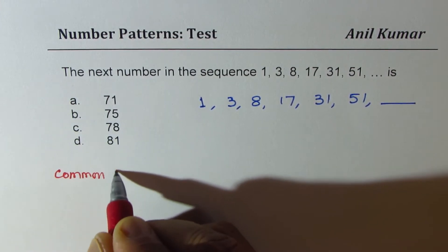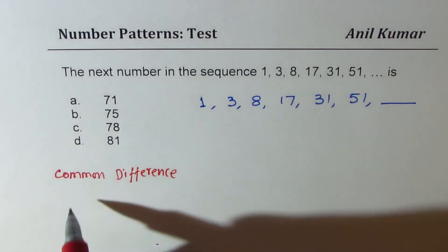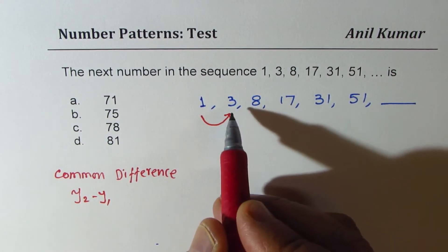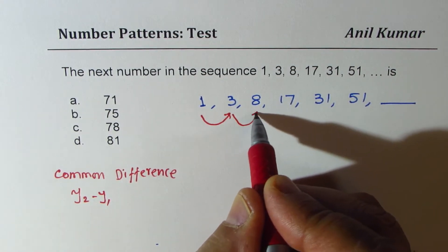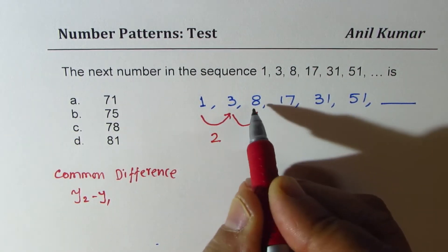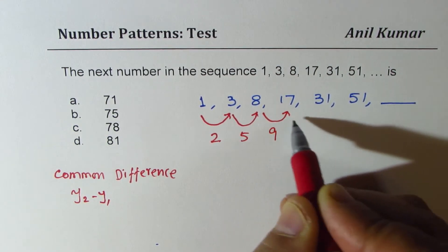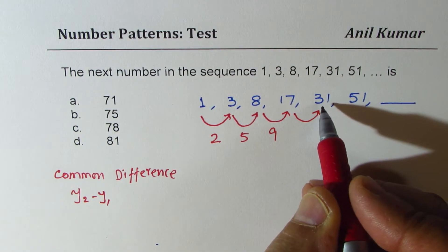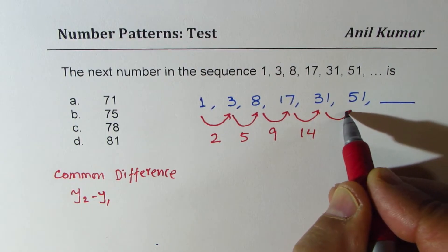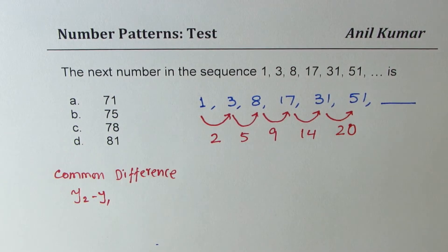The common difference is like y2 minus y1. So we find: 3 minus 1 is 2, 8 minus 3 is 5, 17 minus 8 is 9, 31 minus 17 is 14, and 51 minus 31 is 20. So the first-level common differences are 2, 5, 9, 14, 20.